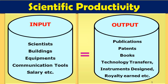Normally whenever we are doing research, or whenever we are talking about scientific productivity, there are two things: input and output. In the scientific field, the input includes scientists and their efforts, like infrastructure, equipment, labs, communication tools, and all expenditures such as salary, chemicals, and consumables. As a result of scientific work, we get output in the form of publications, patents, book chapters, technology transfer, IPR, instrument design, or royalty earned.